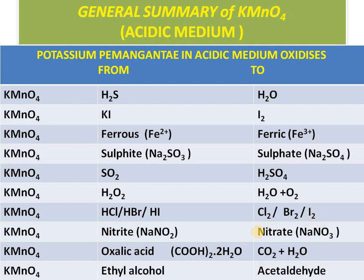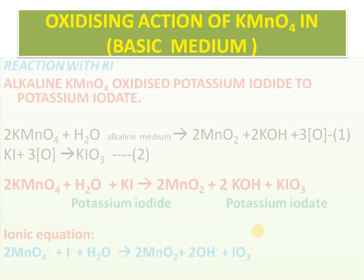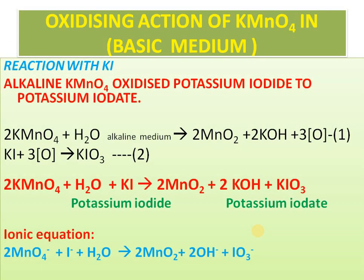Now, basic medium and neutral medium — very few reactions are there, only one reaction each in the syllabus. For basic medium: KI. The same approach — 2KMnO4 + H2O gives 2MnO2 + 2KOH + 3O; then KI + 3O → KIO3. Here KI is not converted to I2 but to KIO3 — potassium iodide is converted to potassium iodate. Multiply by 3 and add to get the balanced equation. After writing, please check that the equation is balanced.